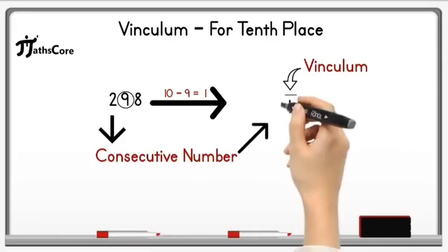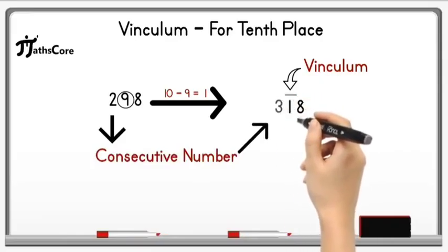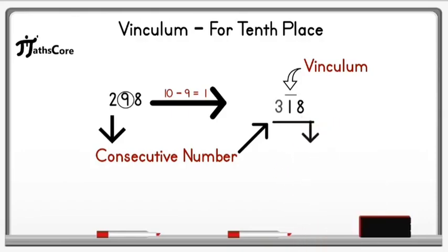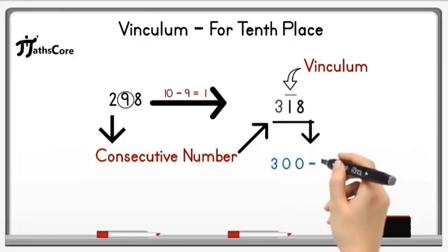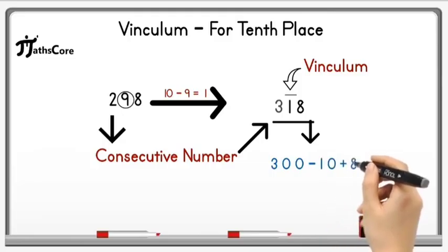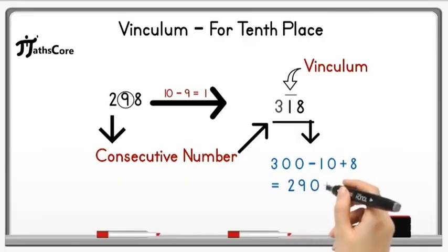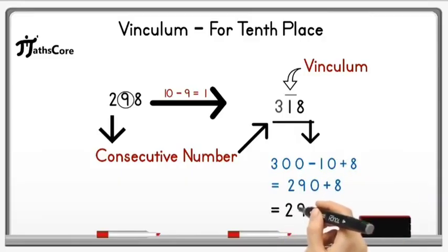The meaning of this number is: subtract the tens place digit 1 from the hundreds place digit 3, and add the unit place digit 8. The place value of 3 is 300 and the place value of 1 is 10. So 300 minus 10 equals 290, and 290 plus 8 equals 298, which is the given number.